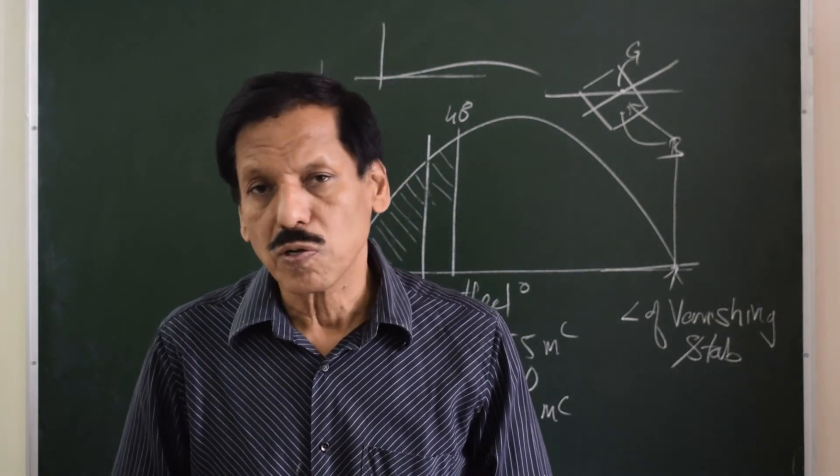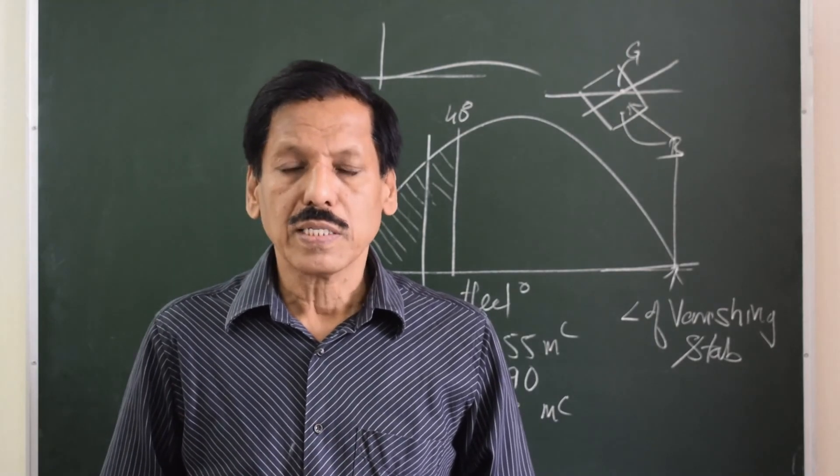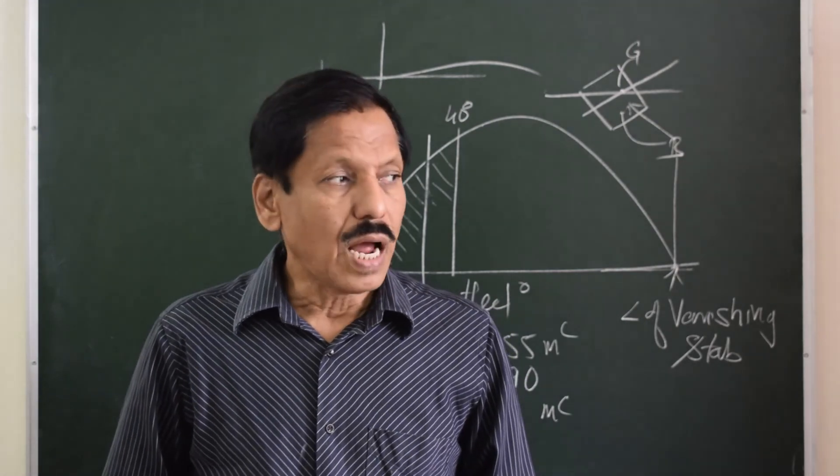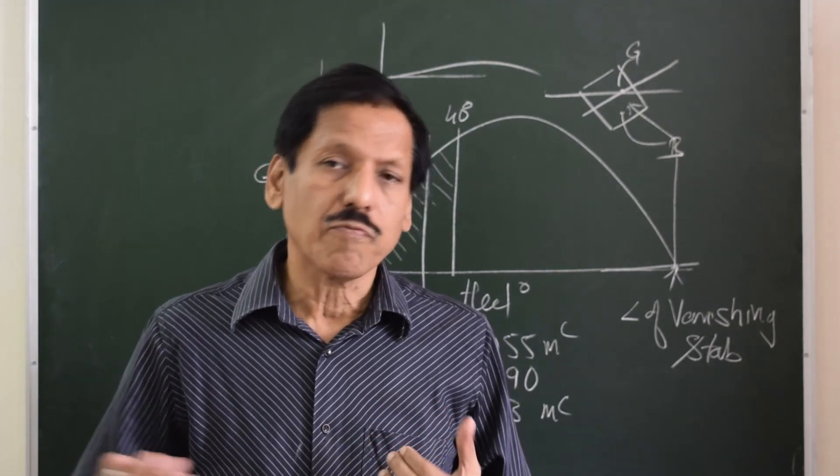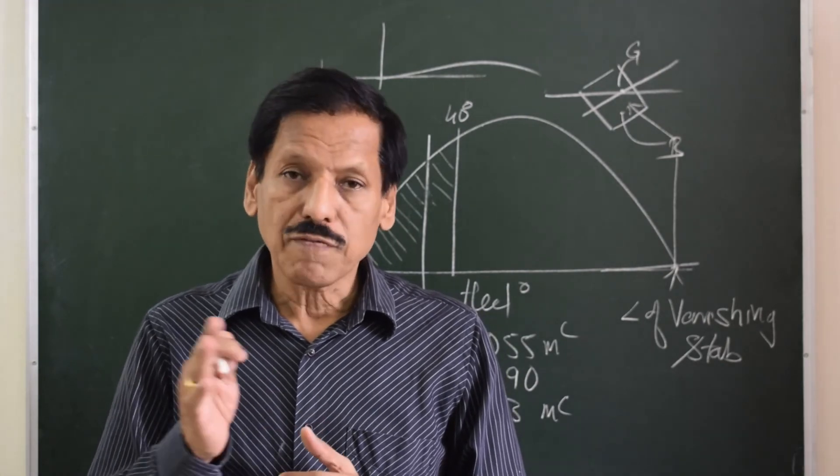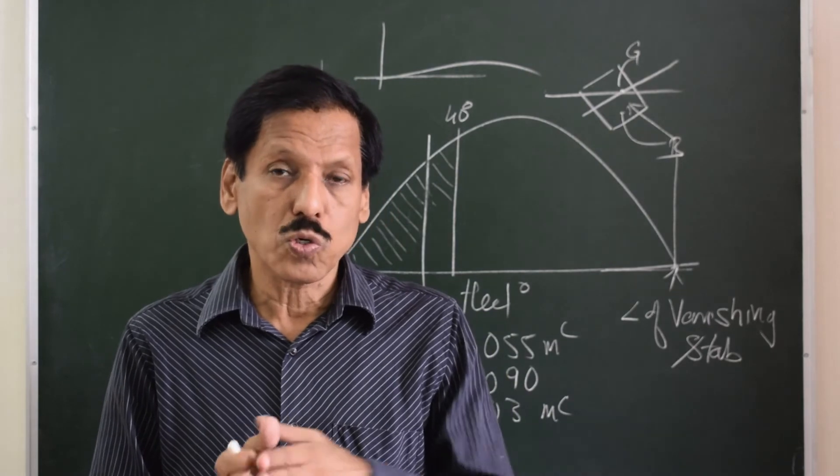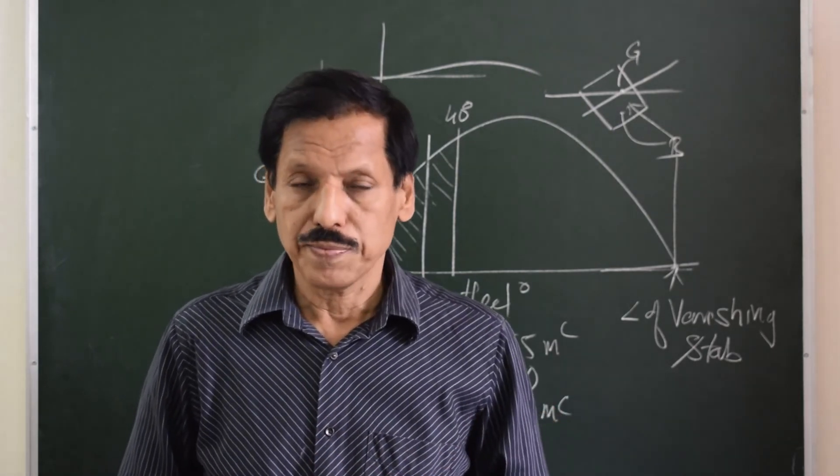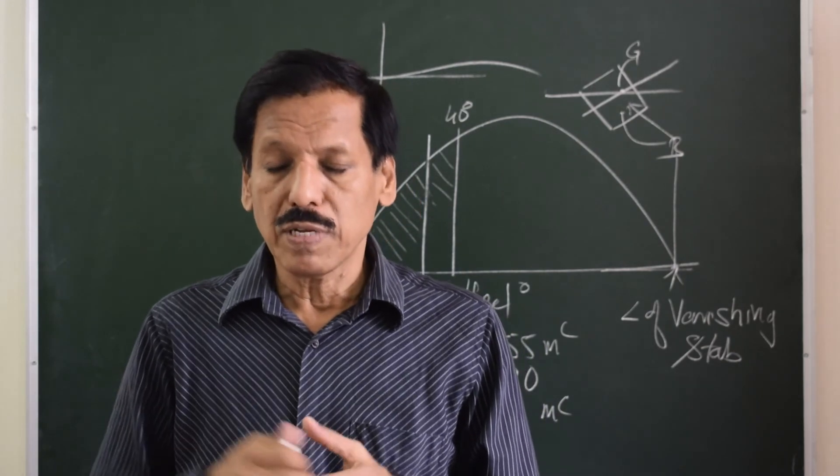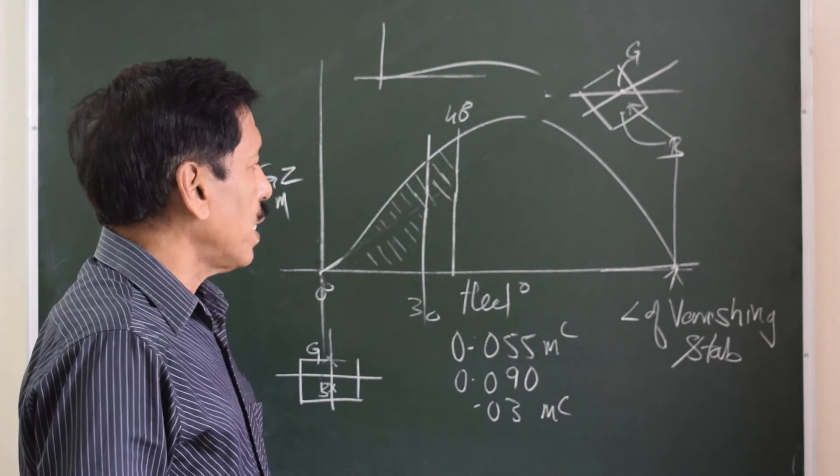So this criteria in a way shows the importance of good stability in the area beyond 30 degrees. Next criteria implies the shape of the GZ curve. It says that the maximum GZ value of a GZ curve should be after 30 degrees, and if it is not after 30 degrees, at least it should not be before 25 degrees. So if you have a peak between 25 and 30 degrees it is acceptable, but preferably it should be beyond 30 degrees.